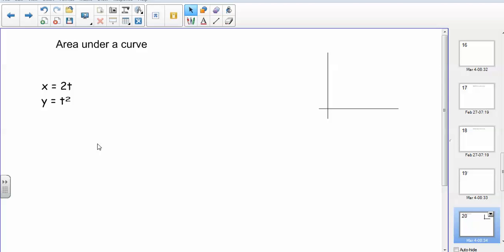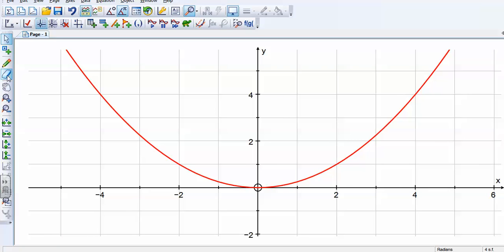So we've got x is 2t and y is t squared. Looking at the graph software, it's actually a parabola. Let's say we want the area between x is 4 and x is 0. So we want the area under the curve, which will be this area here.